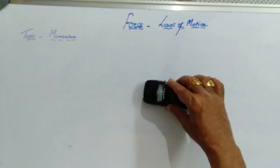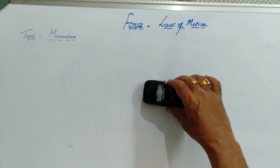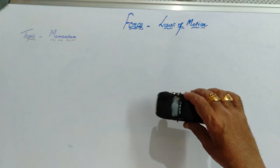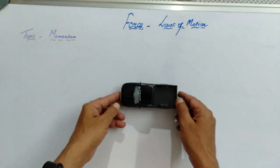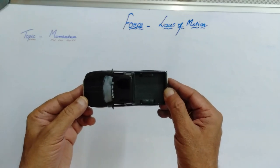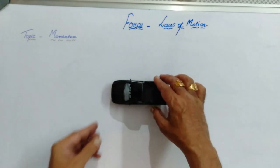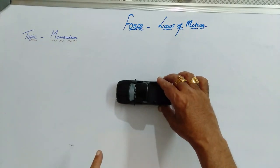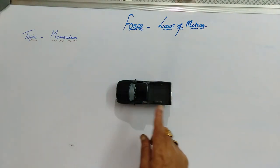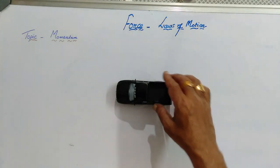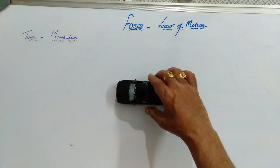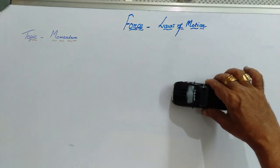Now let's do another demonstration. From day-to-day life experiences, we know that if you want to increase the velocity of any object, you have to increase the force. This can be demonstrated with the spring-powered car: winding the spring for fewer windings produces smaller velocity. Let's first show it with a small winding.